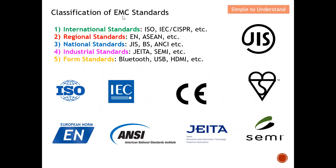Let's start by mentioning the classification of EMC standards — there are five of them. The first is the international standard; you're probably familiar with ISO, IEC, and CISPR. We also have regional standards, such as Europe and Asia. Then national standards, for example the Japan Industry Standard, British Standard, and the American National Standards Institute (ANSI). We also have the industry standard from JEITA — the Japan Electronics and Information Technology Industries Association — and lastly, the form standard.